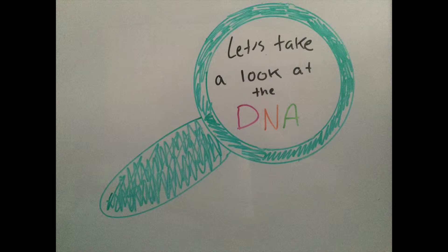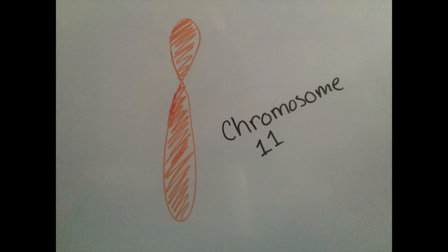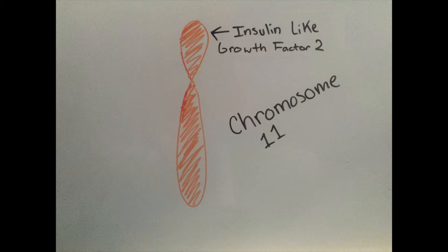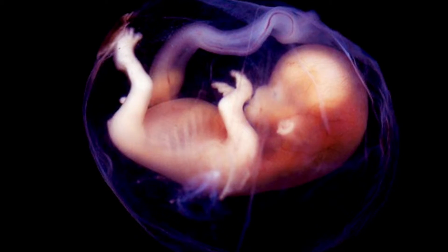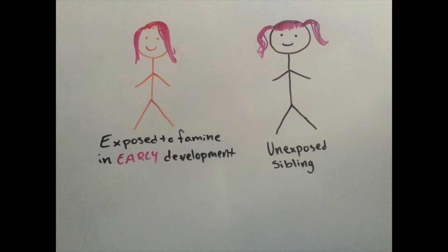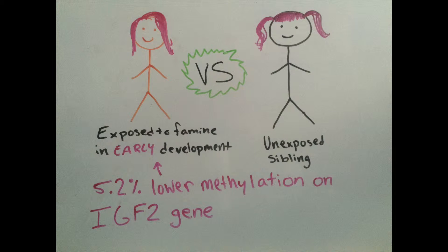Let's take a closer look at their DNA to find out more. Chromosome 11 contains the insulin-like growth factor 2 gene, which plays a large role in the development of a fetus, although it plays less of a role after birth. Scientists compared the IGF-2 gene of individuals affected by the famine in early development, or the big babies, to their siblings of the same sex.